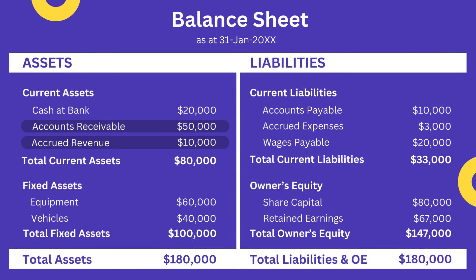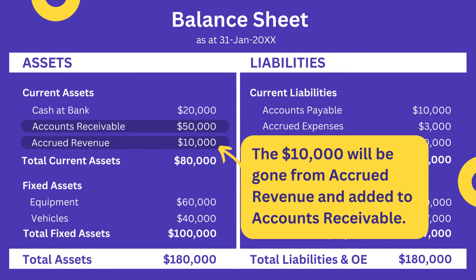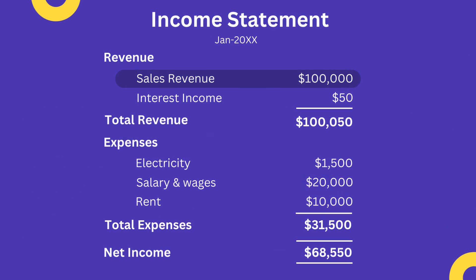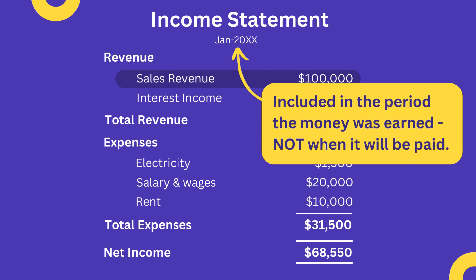The result will be that the $10,000 of Accrued Revenue will be gone from the balance sheet and replaced by an extra $10,000 in Accounts Receivable, and it will stay there until the customers pay for their invoices. On the income statement, the $10,000 will only be included once, and that will be in the period in which the money was earned and not when the invoices are paid.